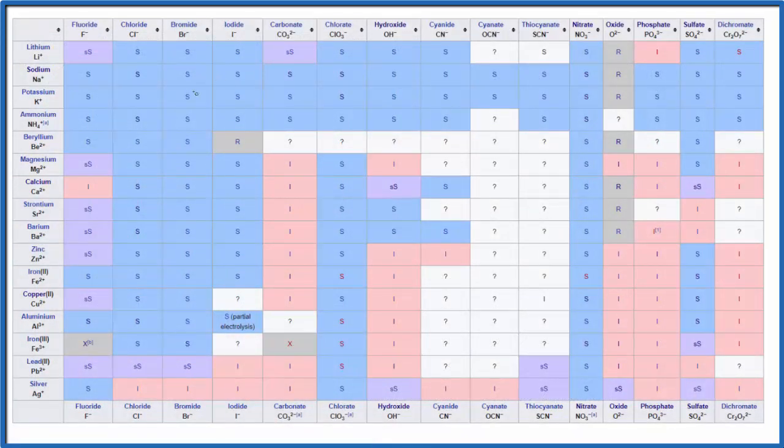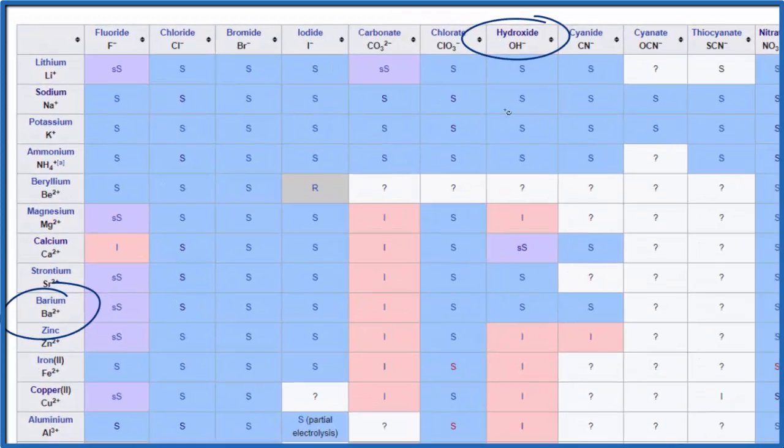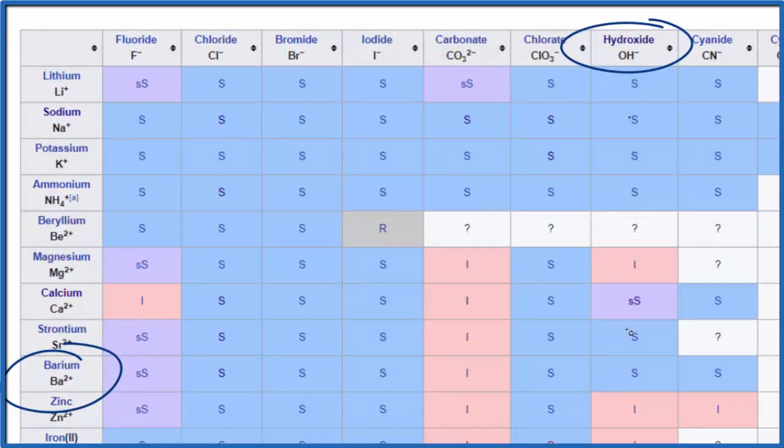So on our solubility chart here, we're looking for barium—that's right here—and then the hydroxide. We go down here and then over. Barium hydroxide, that S means it's soluble. It will dissolve in water and break apart into its ions.